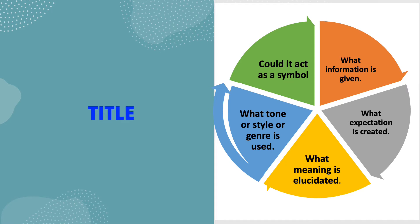Our first element is the title. Sometimes the title is written as a symbol — if there is a symbolic value, mention it. If there is a special expectation the poet needs to elucidate, you can mention it. Or if it expresses any genre, style, or tone, you can take it out. If you don't have anything special, just mention in brief what information is given by the title.